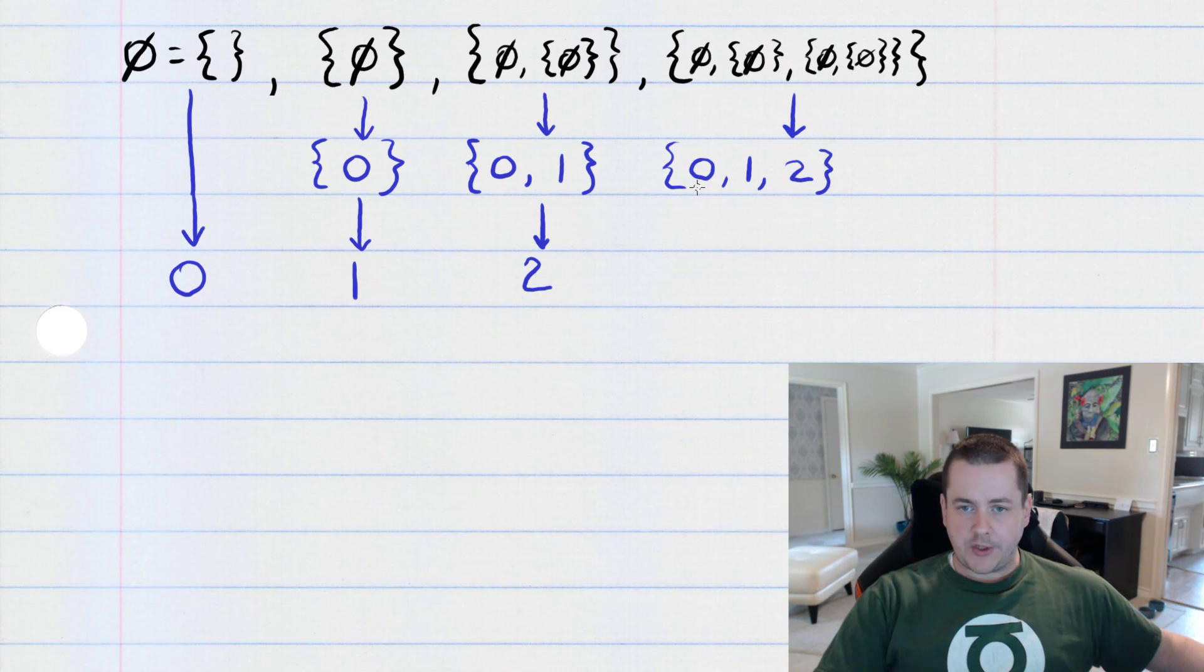And then ask yourself the question, how many elements are in this set? And obviously, there are three elements in that set. And you continue in this way.